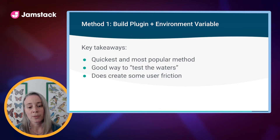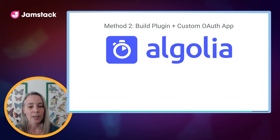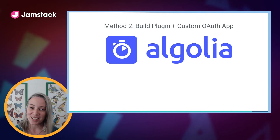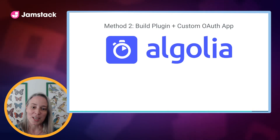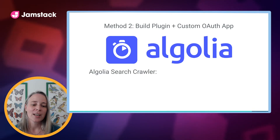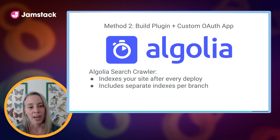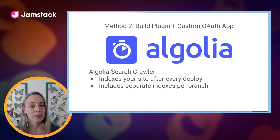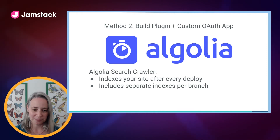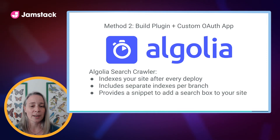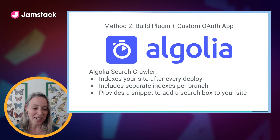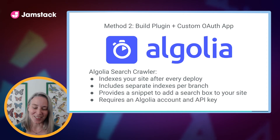So I'm going to talk about some solutions for getting around this issue. The next method is one that was used by Algolia, which is a build plugin plus a custom OAuth app. Perhaps earlier today you saw Algolia's Lightning Launch talking about their plugin. To summarize, the Algolia search crawler indexes your site for search after every deploy. It'll even create separate indexes per branch, so if you're doing a deploy preview or a branch deploy, you can see how the search works before you deploy to production. It also provides a snippet so you can add a search box to your site that's already customized to work with your Algolia instance.